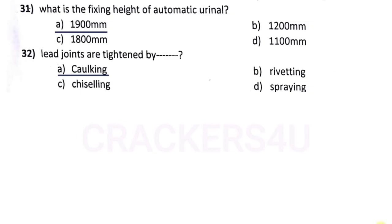Question number thirty: lead joints are tightened by — answer option A, caulking.